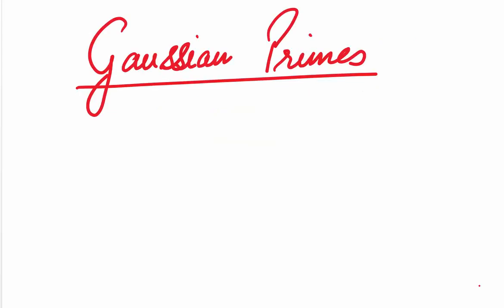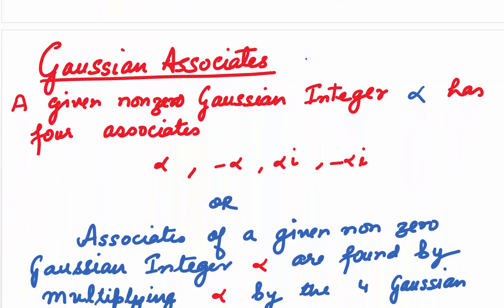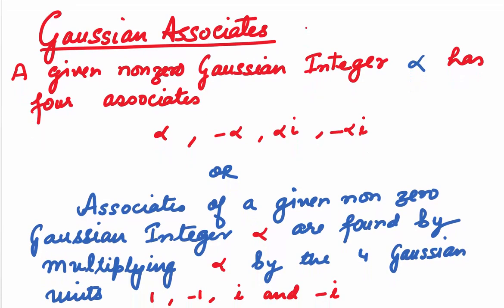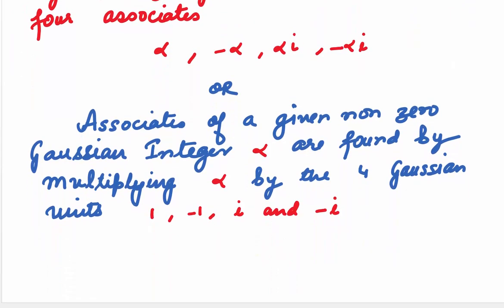Let us come to Gaussian associates. A given non-zero Gaussian integer alpha has four associates: the number alpha itself, minus alpha, alpha·i, and minus alpha·i. In other words, associates of a given non-zero Gaussian integer alpha are found by multiplying alpha by the four Gaussian units: 1, minus 1, i, and minus i.